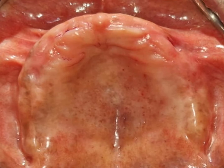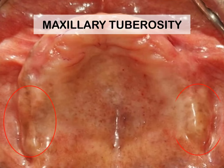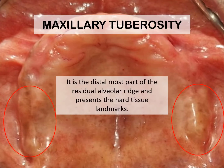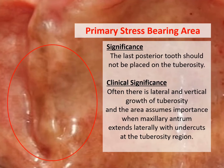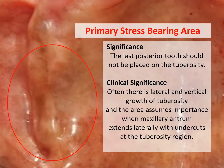First we will be talking about the maxillary tuberosity. It is the distal-most part of the residual alveolar ridge and presents as a hard tissue landmark. It is the primary stress bearing area. The last posterior tooth should not be placed on the tuberosity while fabricating a complete denture. When the posterior maxillary teeth remain unopposed for a long period, there is lateral and vertical growth of the tuberosity. The area assumes importance when the maxillary antrum extends laterally with undercuts at the tuberosity region. Bilateral undercuts can create a problem in placement of the denture, but unilateral undercuts in the tuberosity region can be used for retention of the denture.